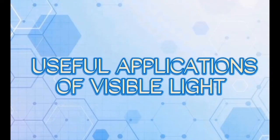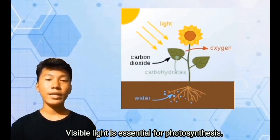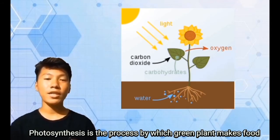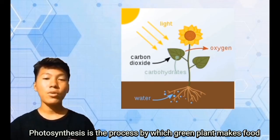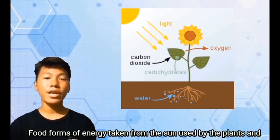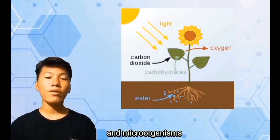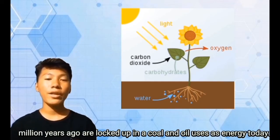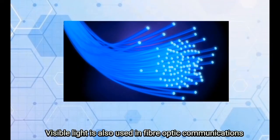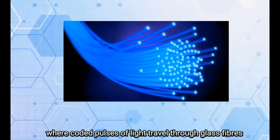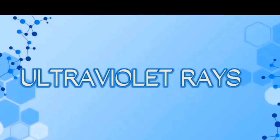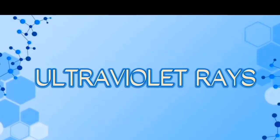Applications of Visible Light: Visible light is essential for photosynthesis, the process by which green plants make food using energy taken from the sun, used by plants and microorganisms. Visible light is also used in fiber optic communication, where coded pulses of light travel through glass fibers from a source to a receiver. Next, after visible light, we have ultraviolet rays.